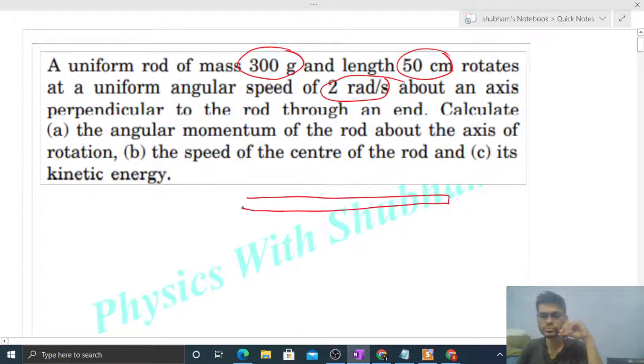We have a rod with mass m, length L, and angular speed omega. Everything is given and it's rotating about an axis perpendicular to the rod and passing through one of its ends. The axis is perpendicular and let's say something like this. What is the angular momentum?